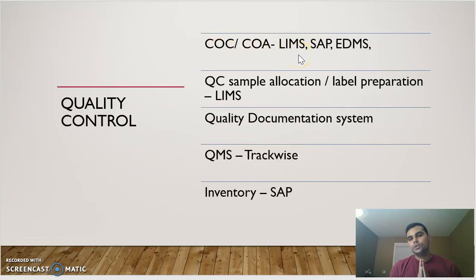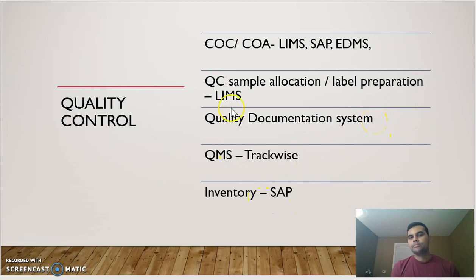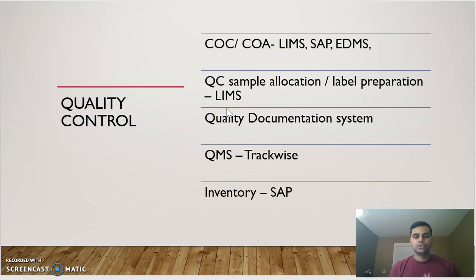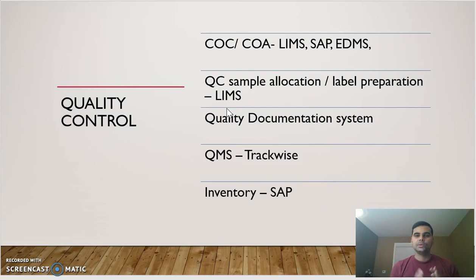In quality control, most of the same software applies — QMS like TrackWise, SAP for inventory, and EDMS for quality documentation. The key differentiating software is LIMS. LIMS is used to produce labels, record samples, enter test results, generate certificates of analysis, and produce certificates of compliance. Many software options similar to LIMS exist under different brand names.